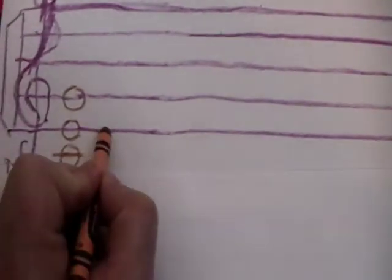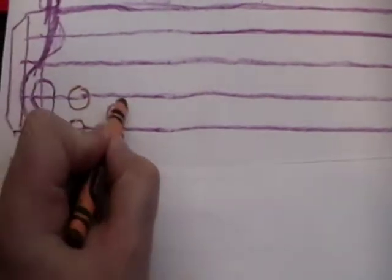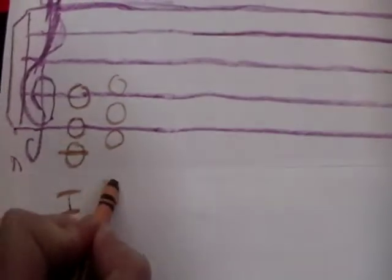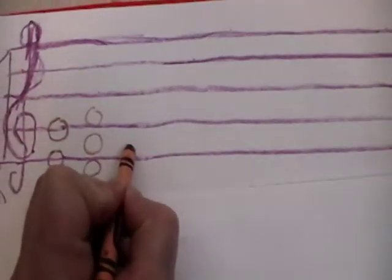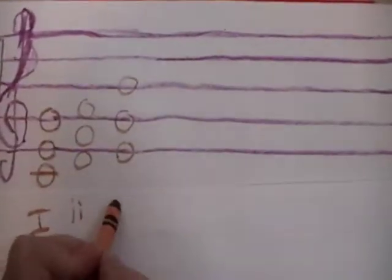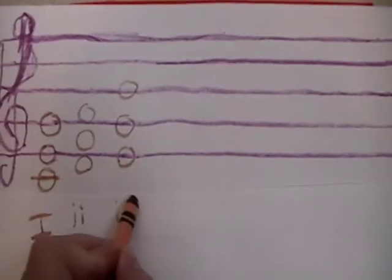We'll get just going right along here. We'll do the D F A, that makes your two chord. E G B is your three chord.